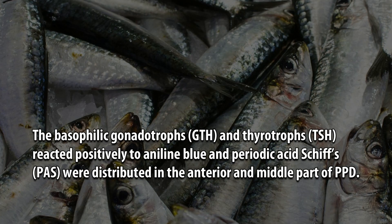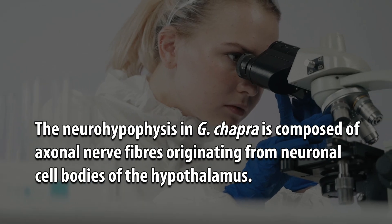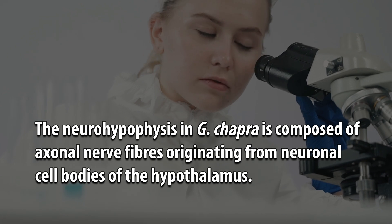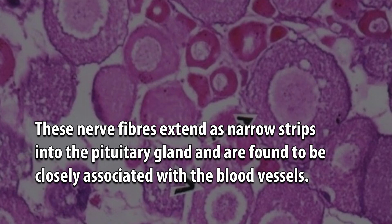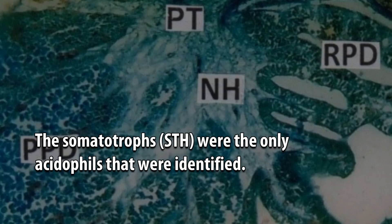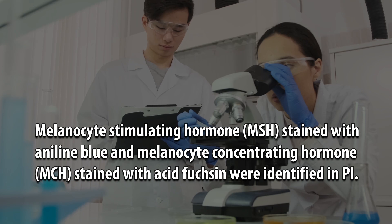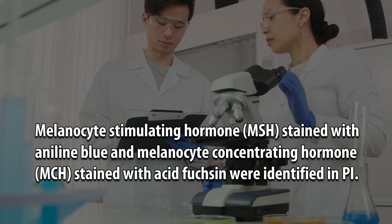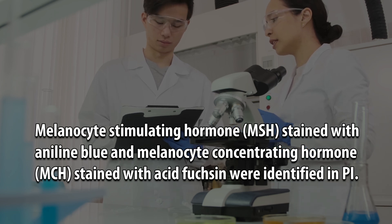The basophilic gonadotrophs (GTH) and thyrotrophs (TSH), which reacted positively to aniline blue and periodic acid-Schiff (PAS), were distributed in the anterior and middle part of the PPD. The neurohypophysis in G. chhapra is composed of axonal nerve fibers originating from neuronal cell bodies of the hypothalamus, extending as narrow strips into the pituitary and closely associated with blood vessels. The somatotrophs (STH) were the only acidophils identified. Melanocyte stimulating hormone (MSH), stained with aniline blue, and melanocyte concentrating hormone (MCH), stained with acid fuchsin, were identified in the PI.